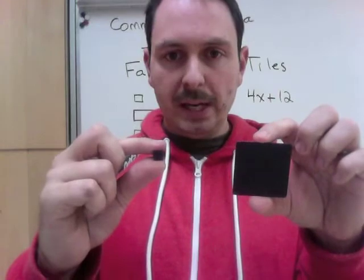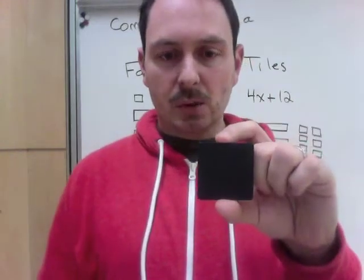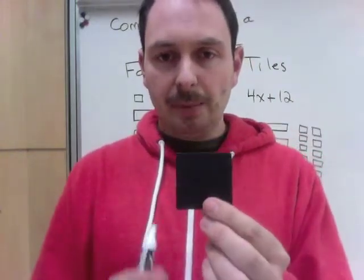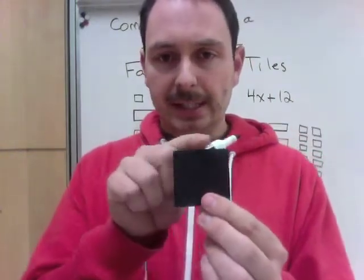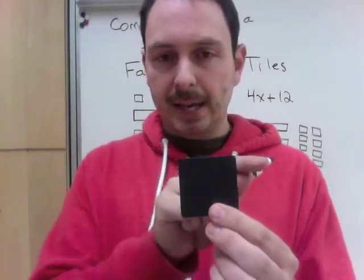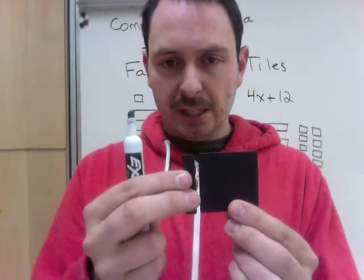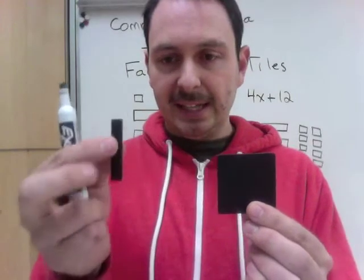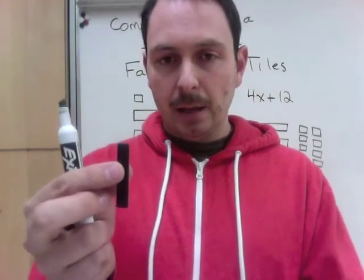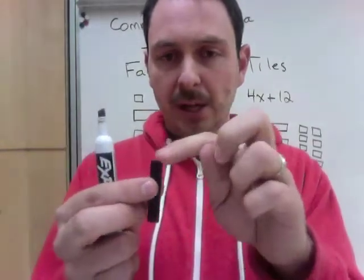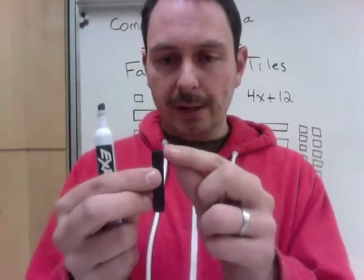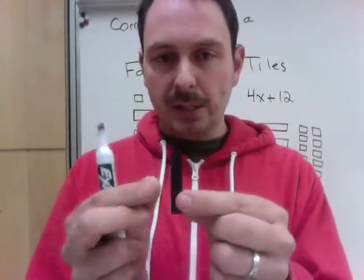The way these work is: this is called an x squared, and it's an x squared because this length is x, this length is x, so x times x is x squared. When we look at this one, notice when I put them together it is just as long, which means it has a length x, but this small length on top is only 1 — its area is x times 1, so it's an x.